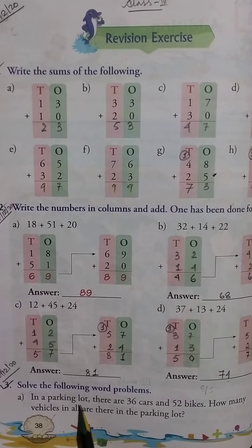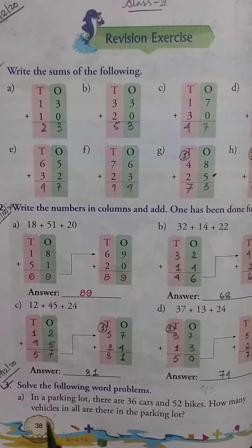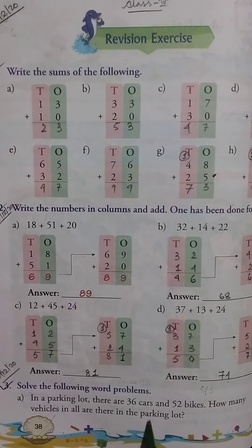Number A: In a parking lot, there are 36 cars and 52 bikes. How many vehicles in all are there in the parking lot?